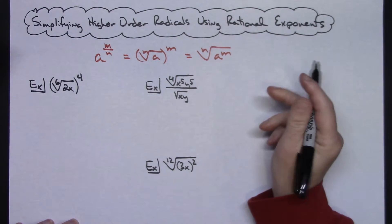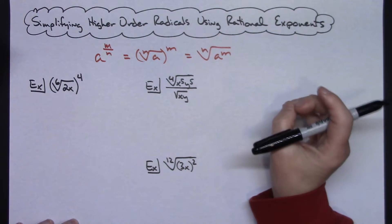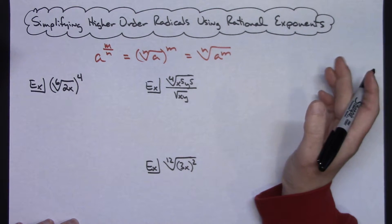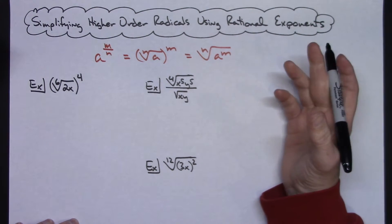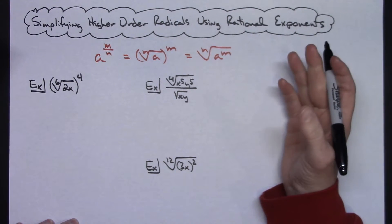In this video I'm going to work out three examples where I am simplifying higher-order radicals using rational exponents. This is just one method of how you might go about simplifying your higher-order radicals, but it is a method that is pretty efficient.